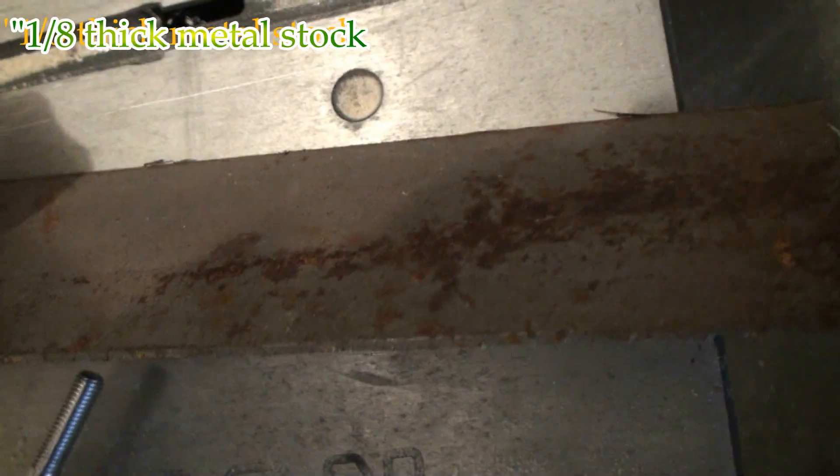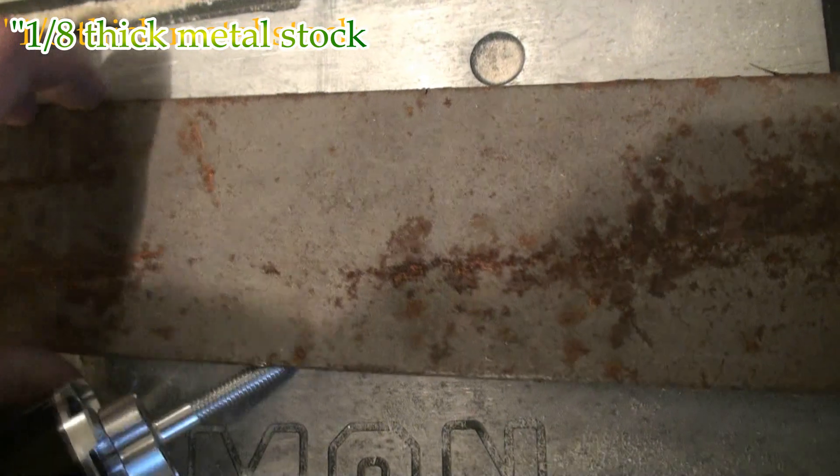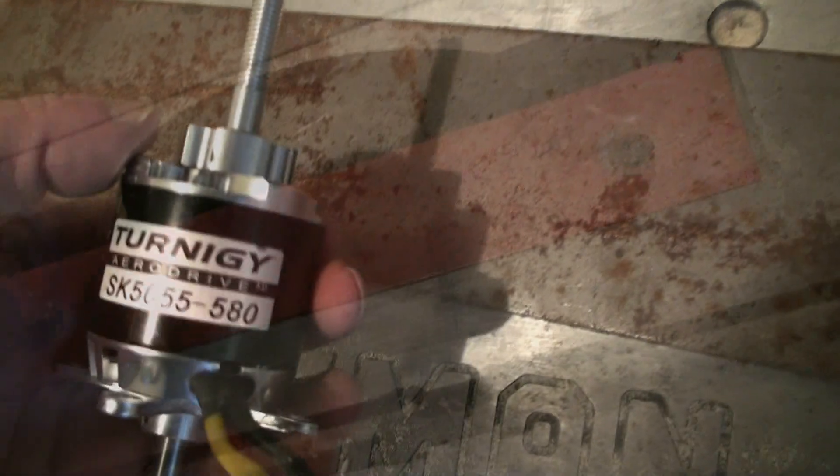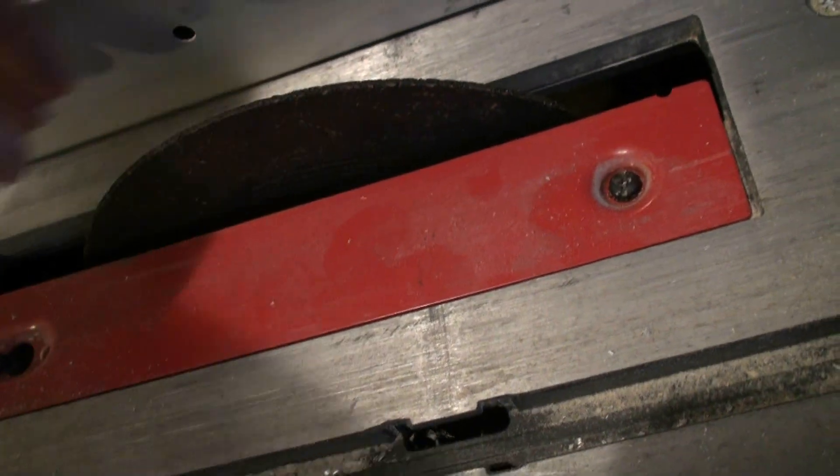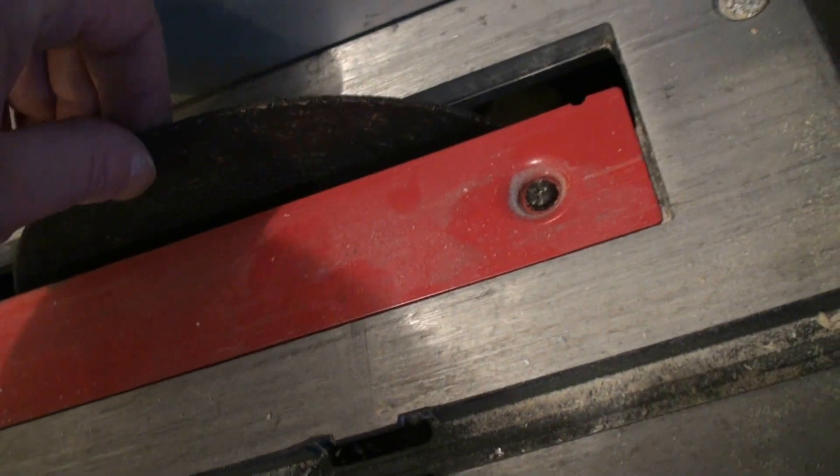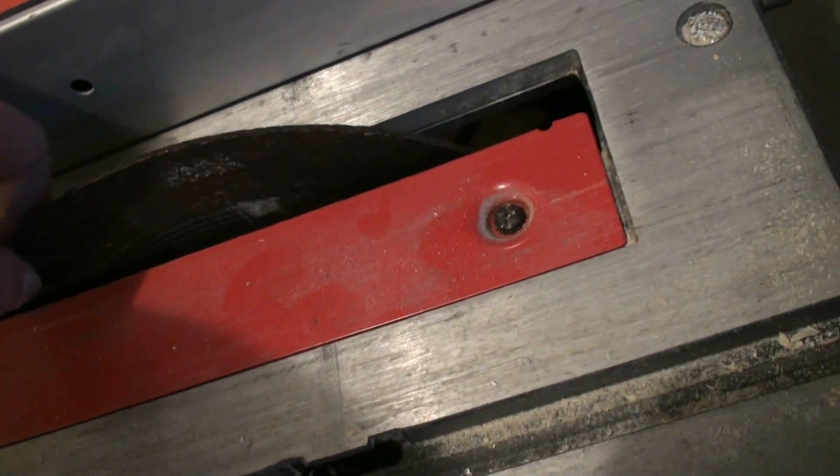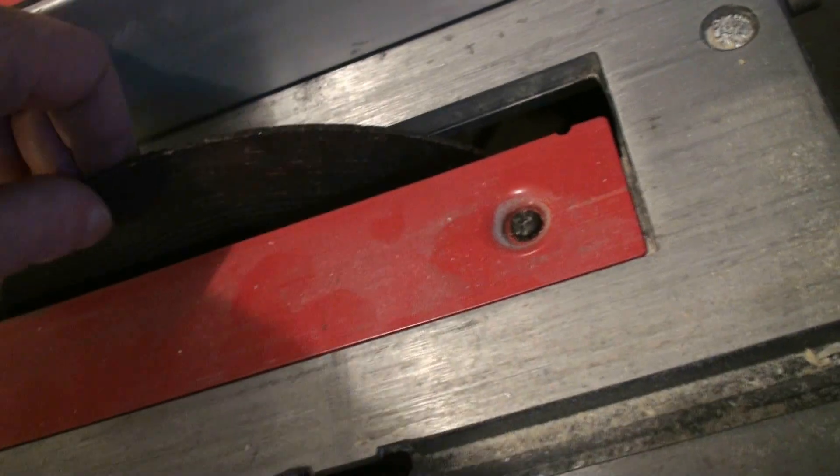Now here's the metal stock that I'm going to be using for the motor mount. I put my metal disc cutting abrasive blade on here and I'm going to start slicing the piece of metal stock now.